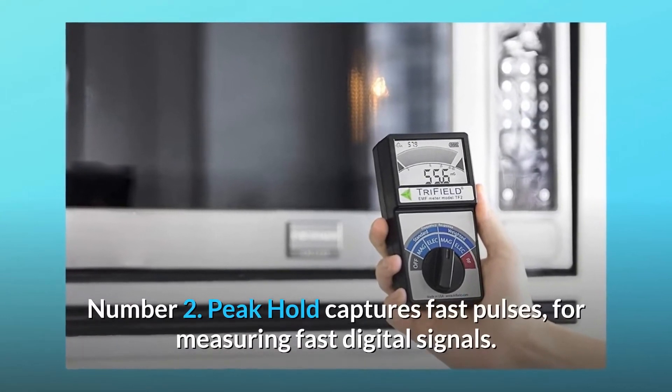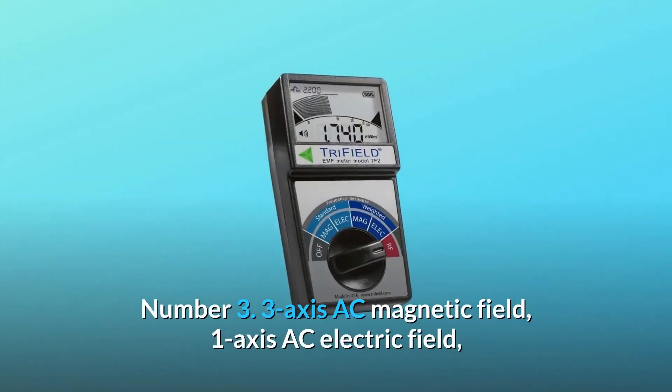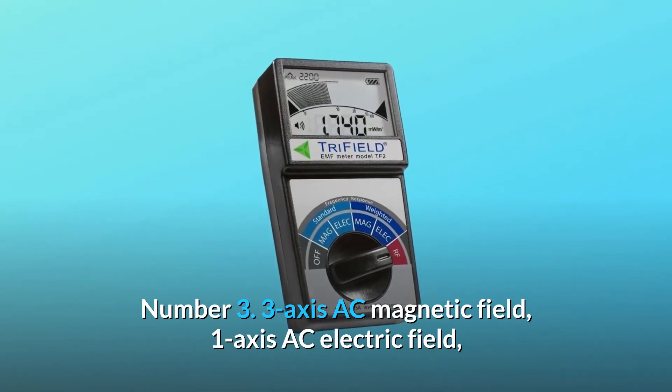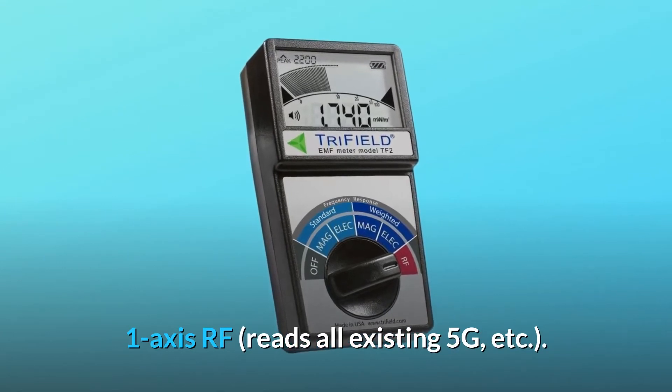Number 2: Peak hold captures fast pulses for measuring fast digital signals. Number 3: Three-axis AC magnetic field, one-axis AC electric field, one-axis RF - reads all existing 5G, etc.